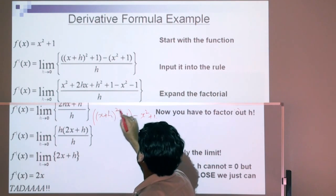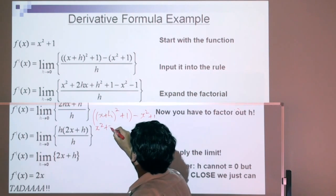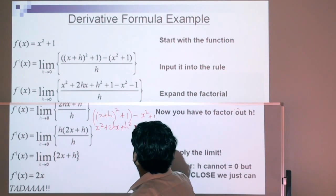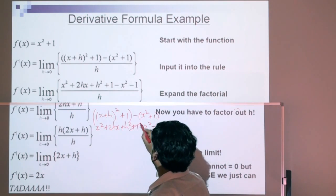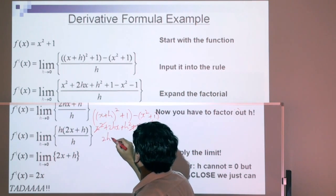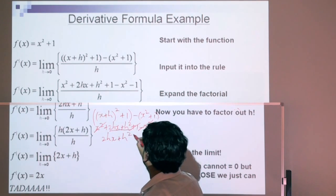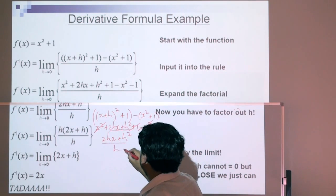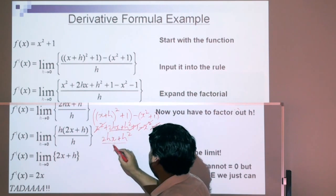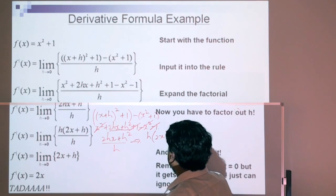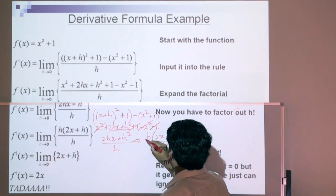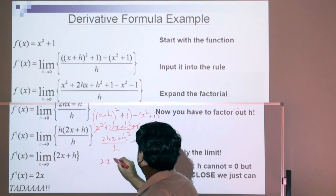That brings us to, we expand that, x plus h times x plus h is x squared plus 2hx plus h squared plus 1 minus x squared minus 1. What we can do here, we're going to simplify this, that plus 1 minus x squared, that brings us to 2hx plus h squared.